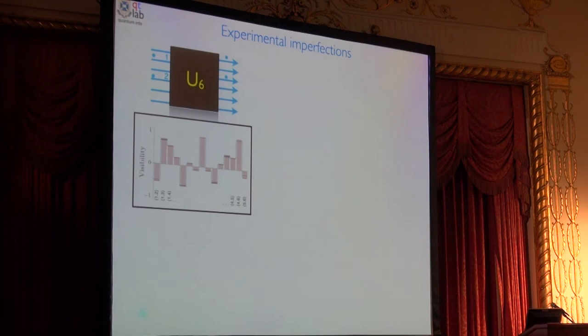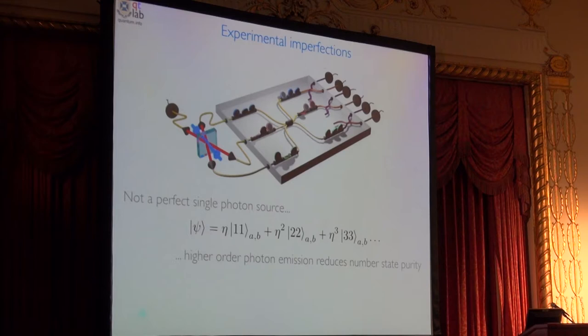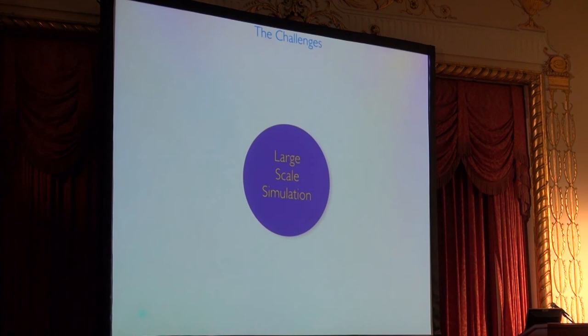But when you zoom in, you see that they don't agree to within error. And that's a really horrific thing for an experimentalist. What's going on? And it has to do with these higher order photon terms. We use down conversion and it's a spontaneous process. And sometimes, instead of producing one photon in each mode, it gives you two photons in each mode. So, that brings me to the challenges for photonic simulation. We want good photon sources, good detectors, good circuits.